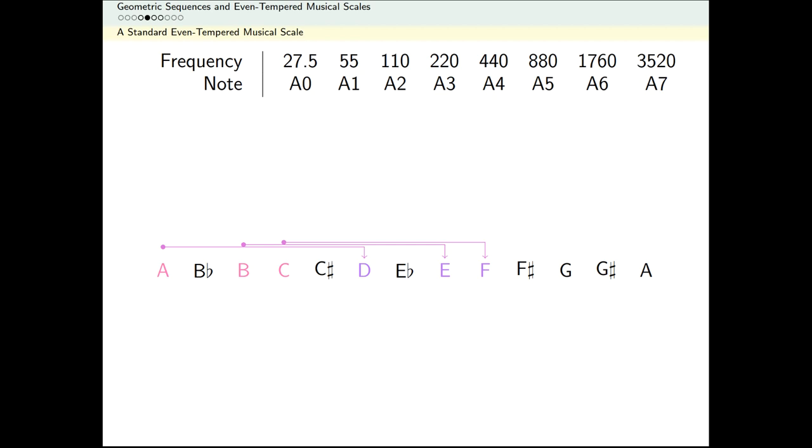If the spaces between every note is consistent, if we have a geometric sequence, then the space between A and B sounds a lot like the space between D and E, and the space between B and C sounds a lot like the space between E and F.